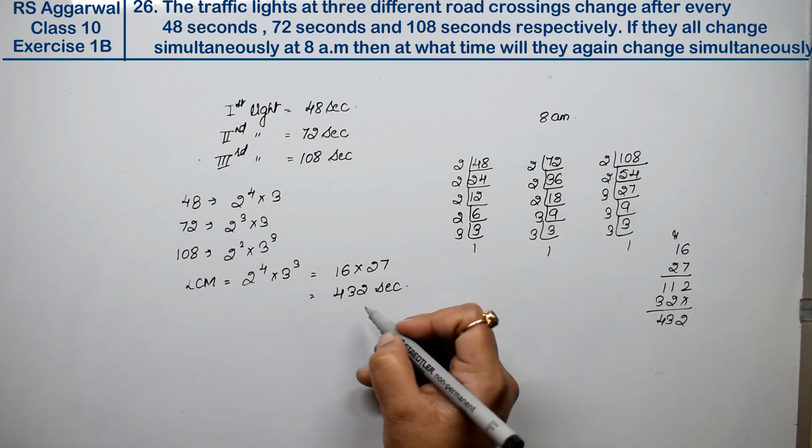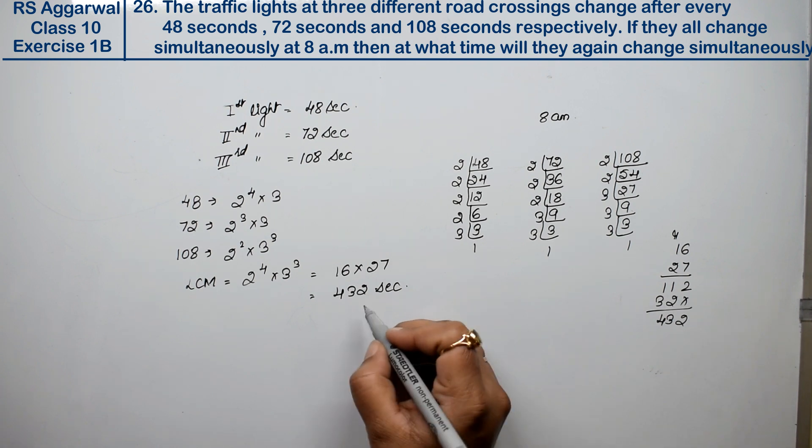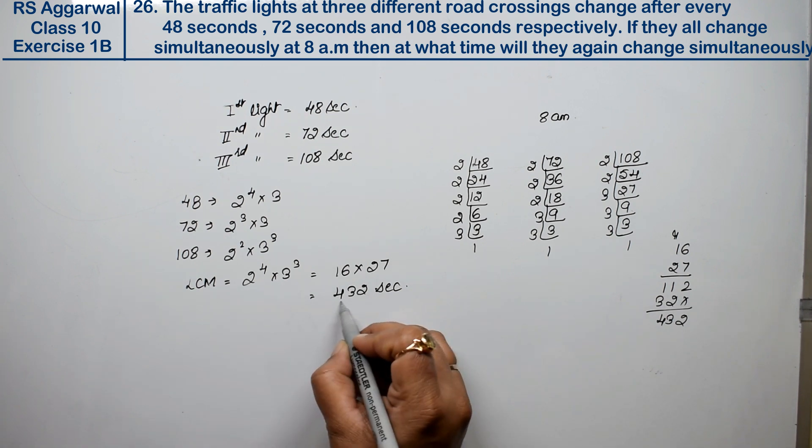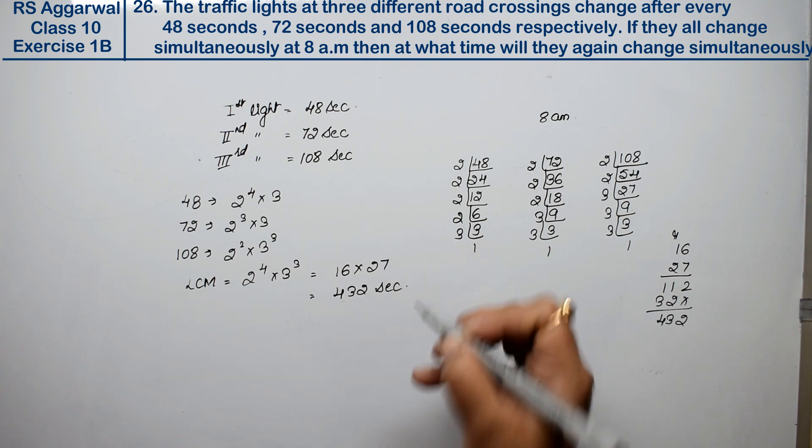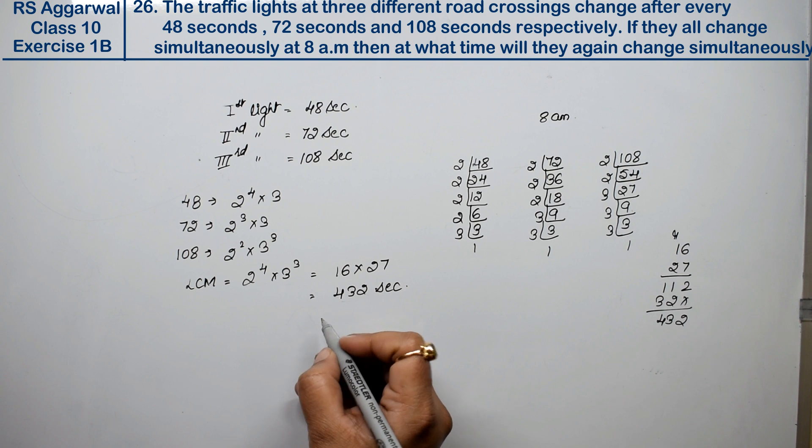432 seconds means the three lights will ring simultaneously after 432 seconds. If we convert this to minutes, how much will it be?